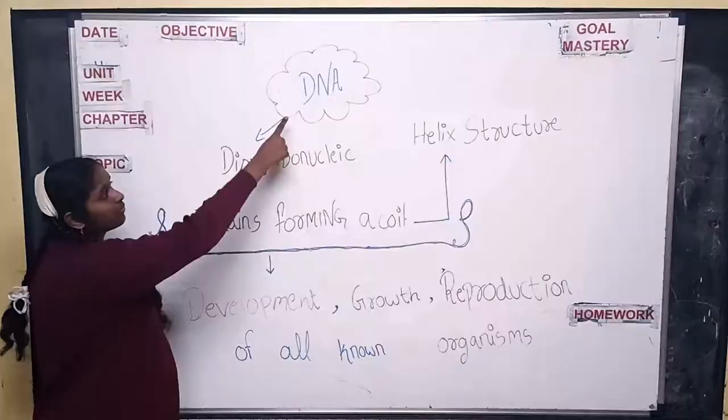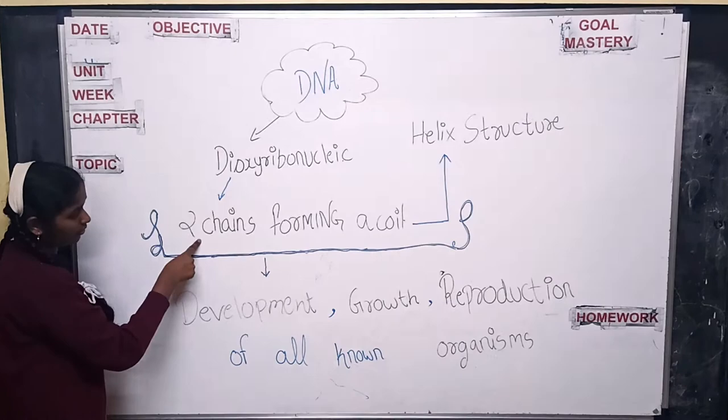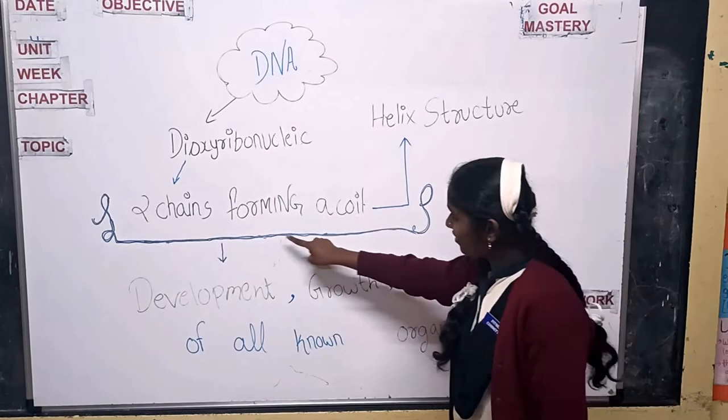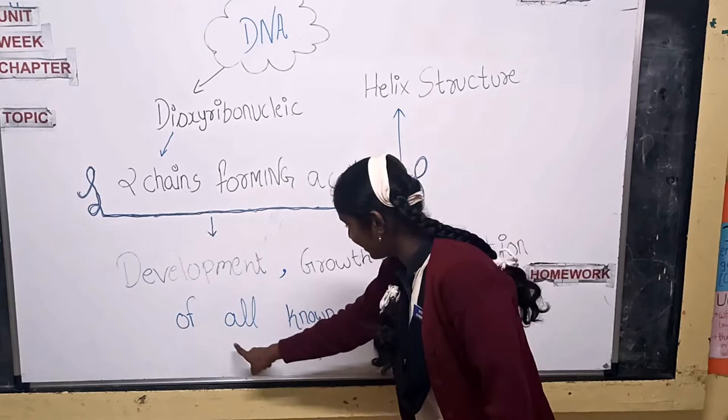DNA is deoxyribonucleic acid. DNA is a molecule composed of two chains that coil around each other to form a double helix, carrying genetic instructions for the development, functioning, growth, and reproduction of all known organisms and many viruses.